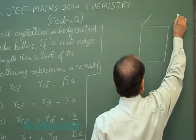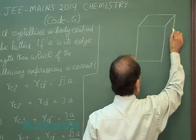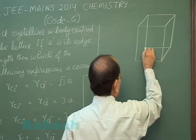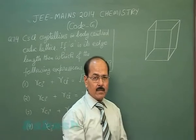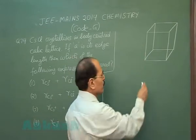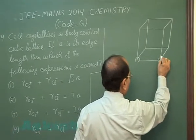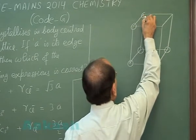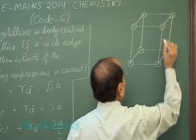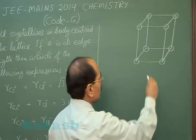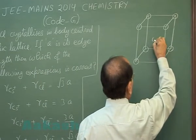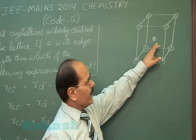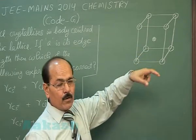Looking at the unit cell of cesium chloride: in the cubic unit cell, the chloride ions occupy the corners of the cube and the cesium ion occupies the center of the cube. The cesium ion will be in contact with the chloride ions at the corners along the body diagonal.